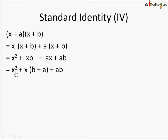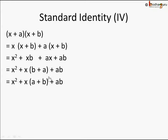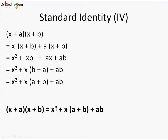Or you can say x² + x(a + b) + ab, because b + a is the same as a + b by the commutative rule. So (x + a)(x + b) = x² + x(a + b) + ab. This is Standard Identity 4.